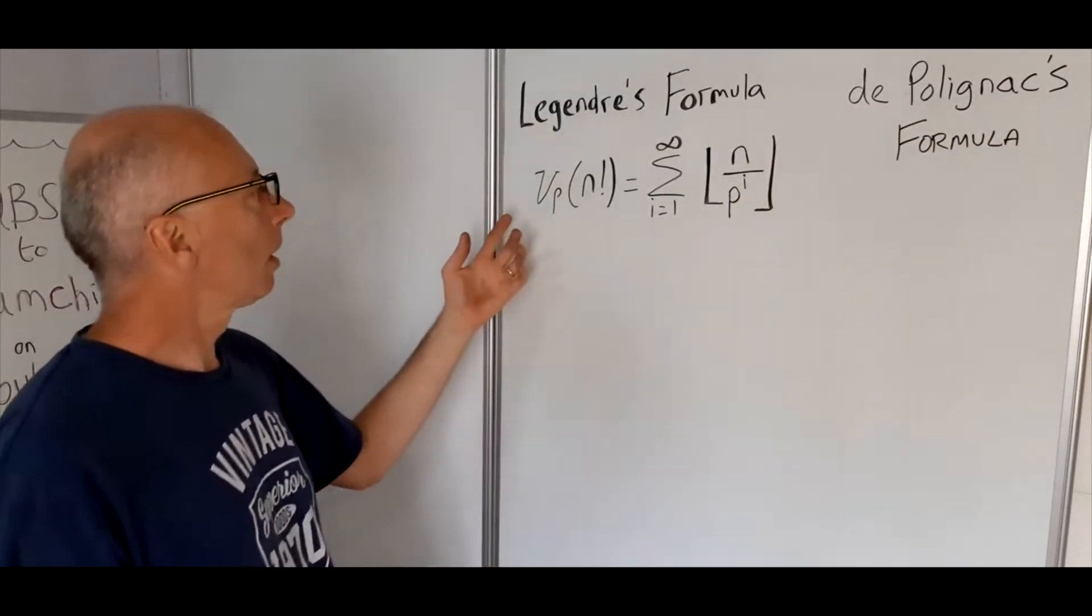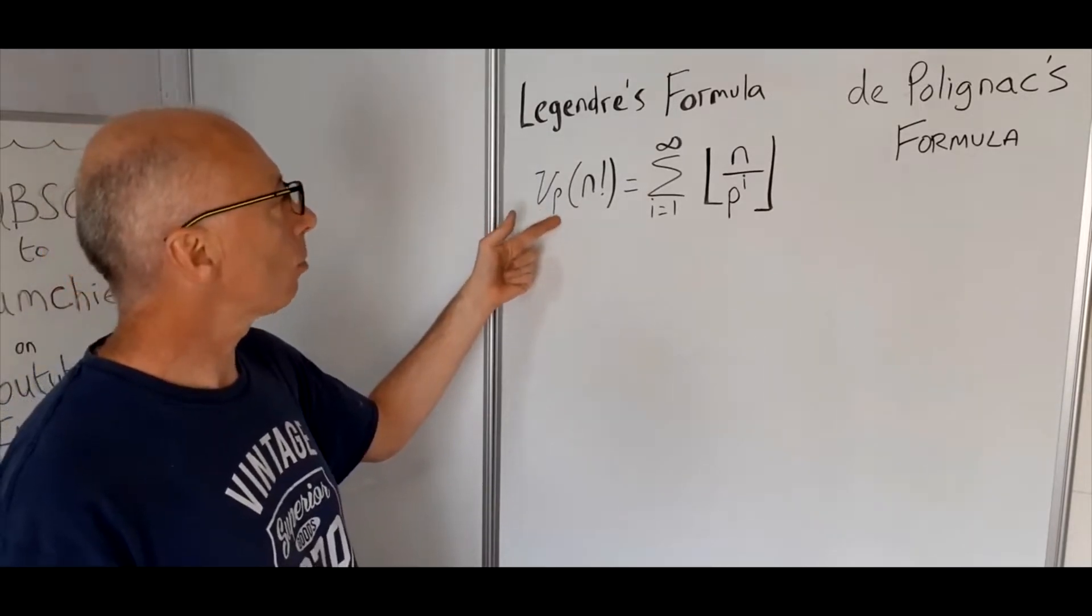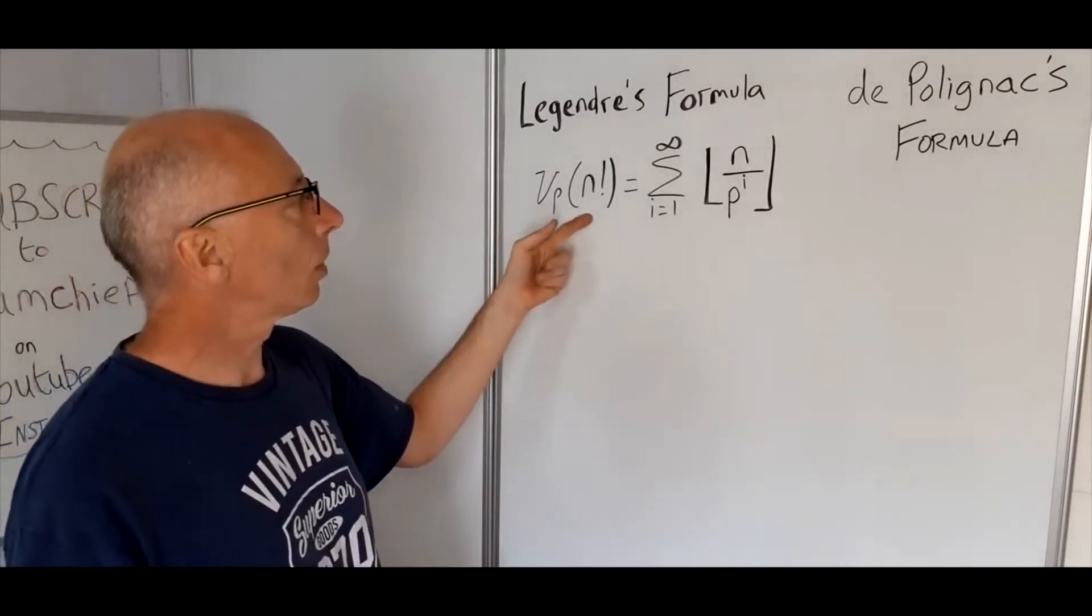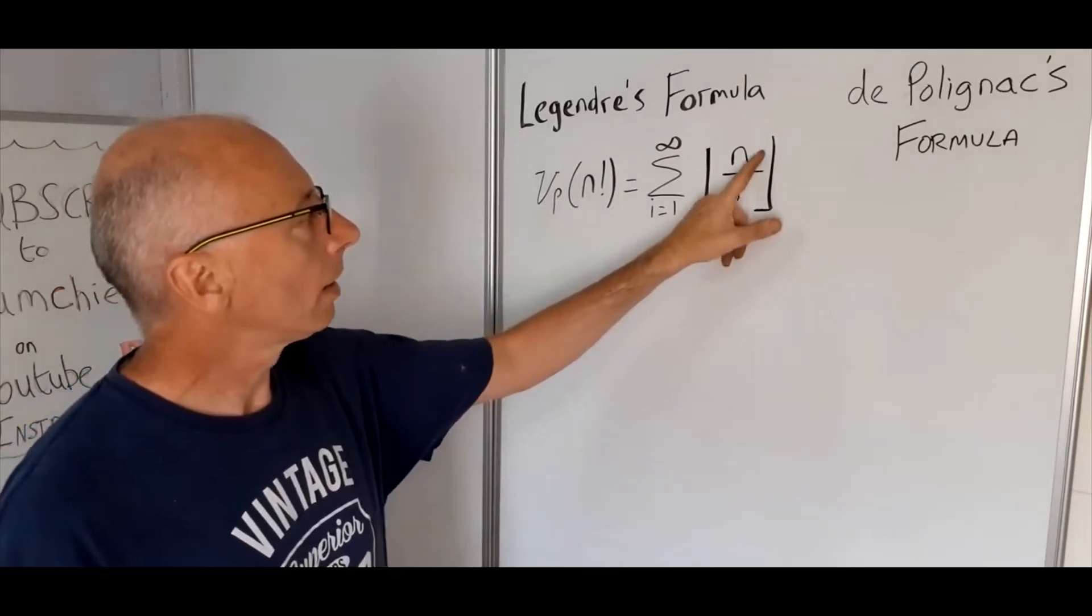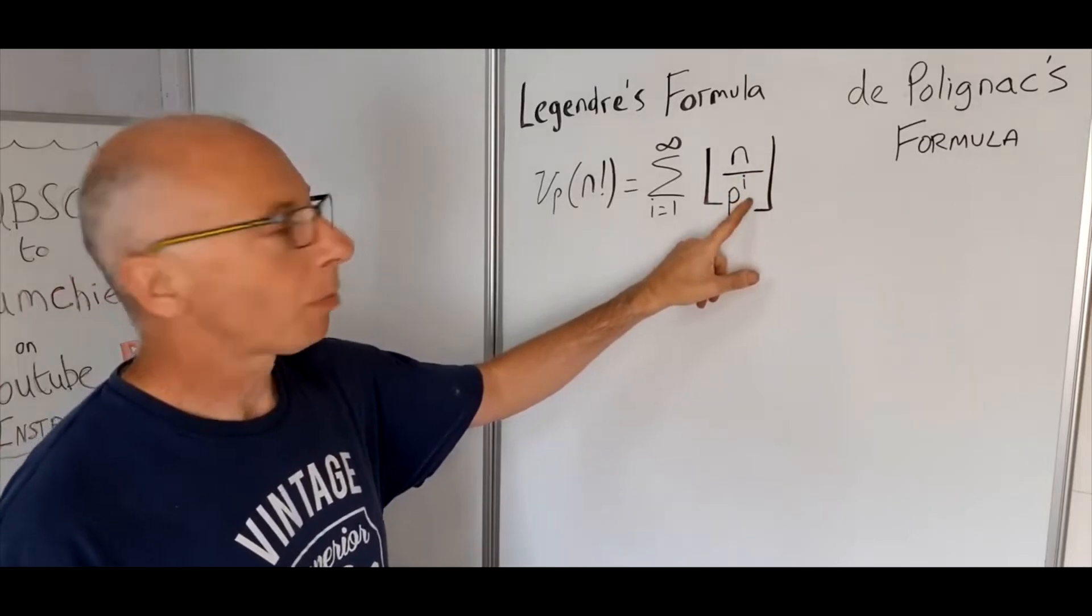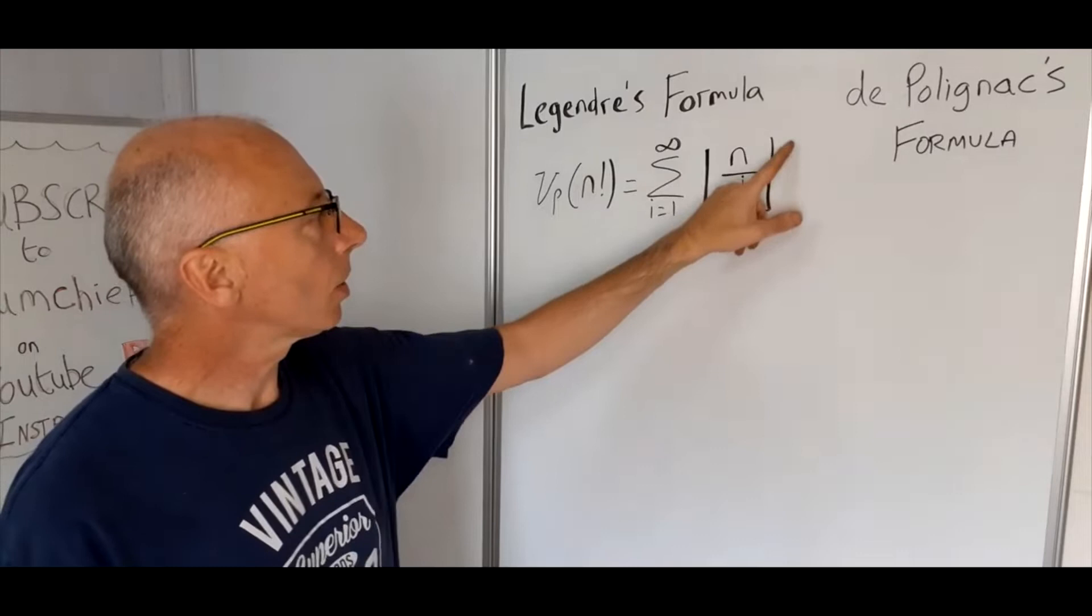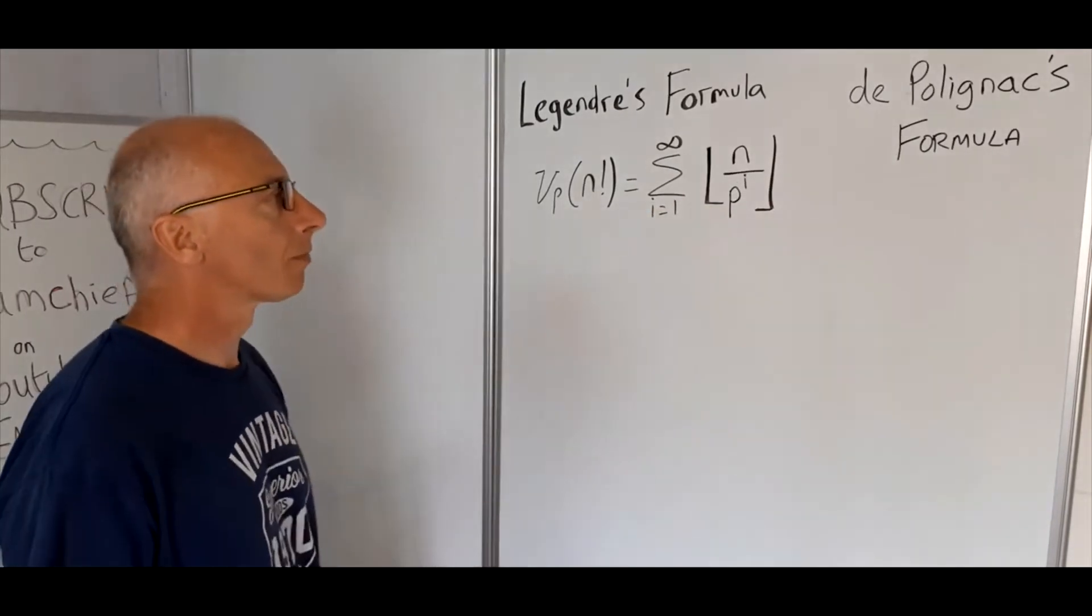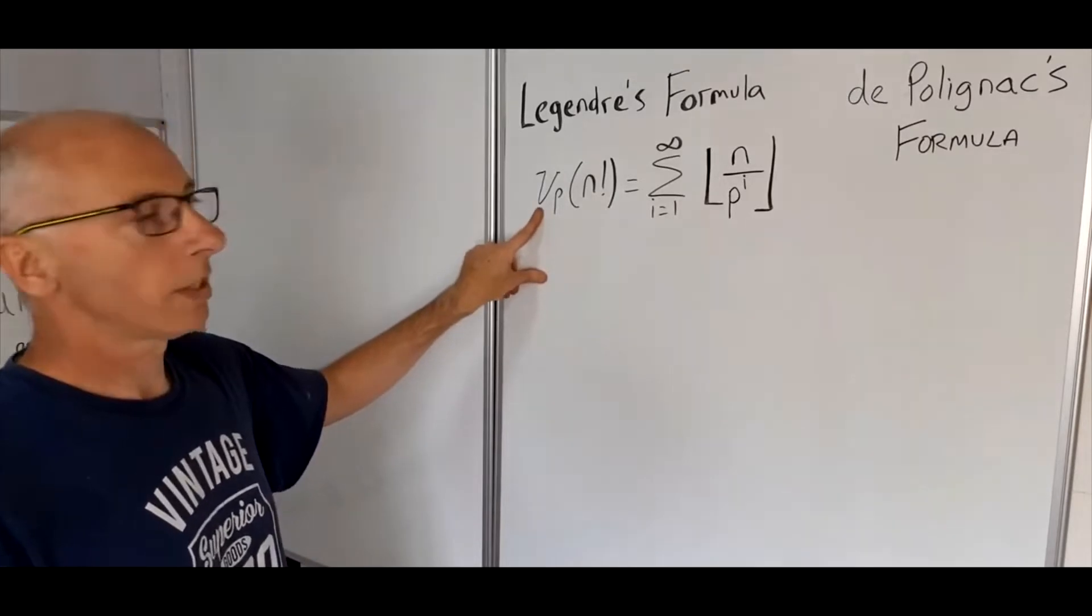Basically what it says is that this, I will just read it out what it says for now. Nu subscript p of n factorial equals from i goes from 1 to infinity of n divided by a prime number p to the power of i, and this notation here is the floor function.